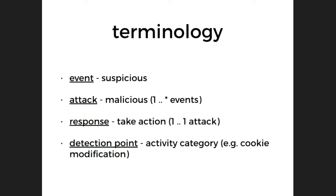Terminology — these are going to be important when we get to the diagram. An event in AppSensor is something that's suspicious but not necessarily bad, but we think it might be bad in aggregate. An attack is one-to-many events that we've determined have crossed some threshold into badness. A response is one-to-one for an attack. A detection point is just the place where you look for bad things or suspicious events.